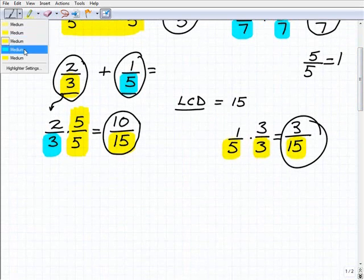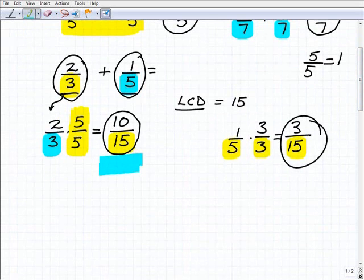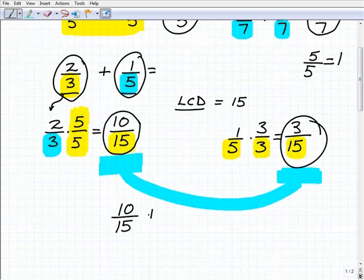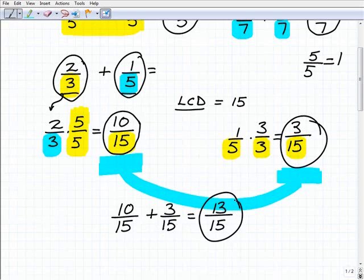So these two now - this is my 2/3 and this is my 1/5 - but the good thing about these two fractions is that they have a denominator of 15. So now I can just rewrite this problem, my original one, as 10/15 plus 3/15. And then I'm going to go ahead and add up - same denominators now - so I just simply need to add the numerators. 10 plus 3, 13/15.